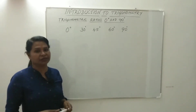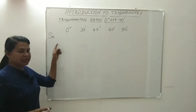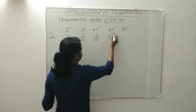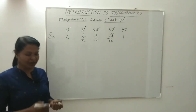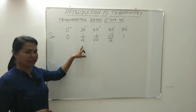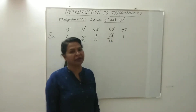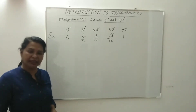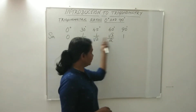Now, I will write the sine values. Sine 0 is 0, sine 30 is 1 by 2, sine 45 is 1 by root 2, sine 60 is root 3 by 2, and sine 90 is 1. These are the sine values.